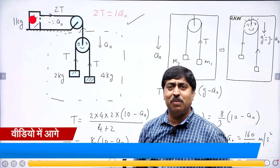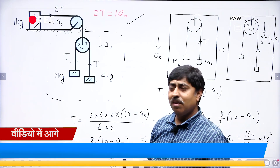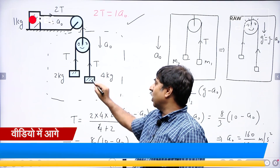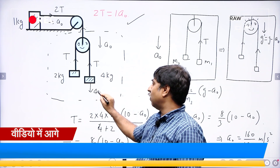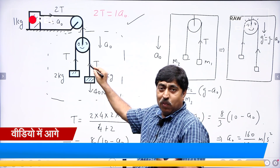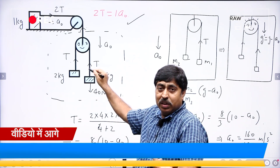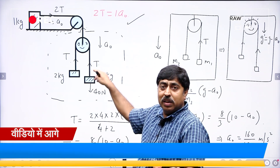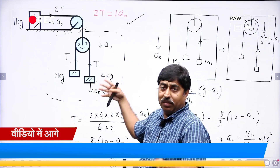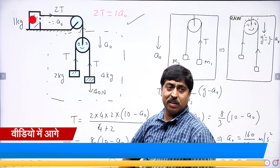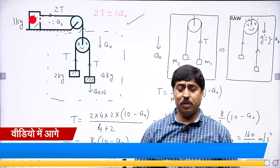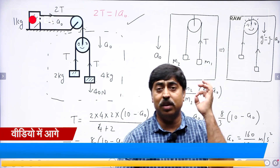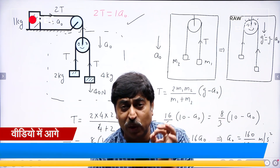Just go in the reference frame of ground. This block is having a force of weight that is 40 Newton and another force is tension. So 40 minus T is mass times acceleration — you get the acceleration of this block, and similarly you can write acceleration of this block. This is the shortest, quickest method of solving this problem.